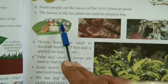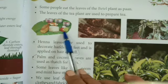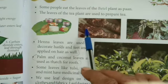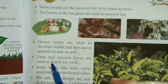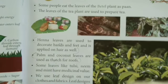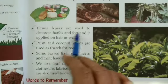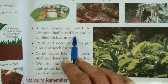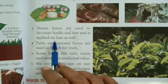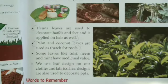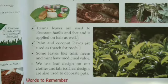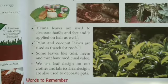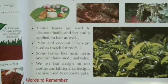Look at this picture — this is a banana leaf and food is served on it. Henna leaves are used to make mehndi. Henna leaves are used to decorate hands and feet, and it is also applied on hair. Palm and coconut leaves are used for roofs.